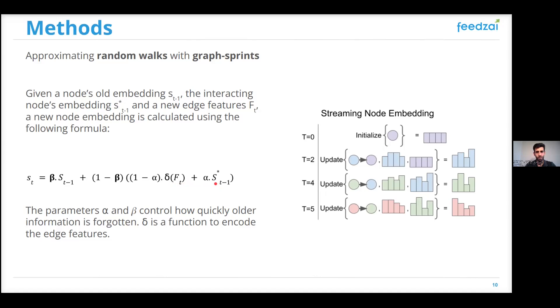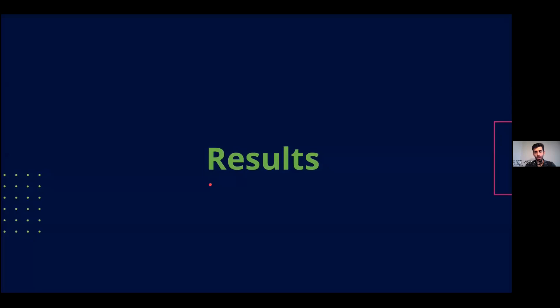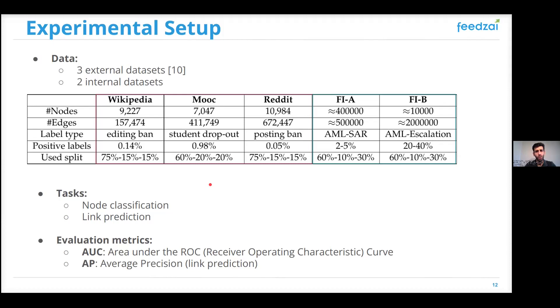Going into the results, in order to assess the performance of our method, we use five different datasets, three external ones from various domains like education and social media, and two internal datasets from the domain of anti-money laundering. These datasets have different sizes, starting from 150,000 edges to around 2 million edges. And we use two tasks, the node classification and link prediction.